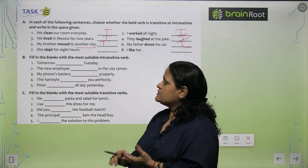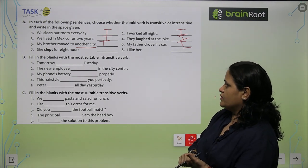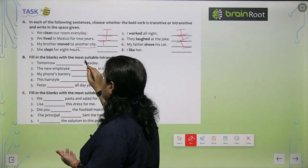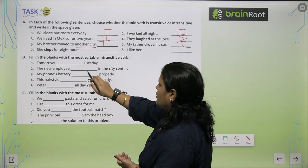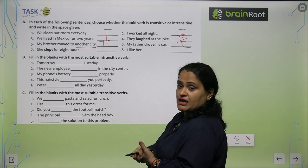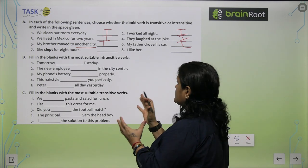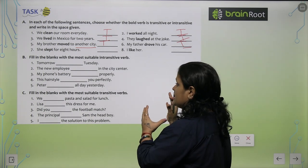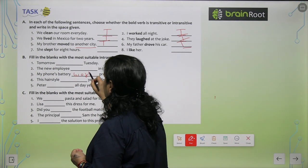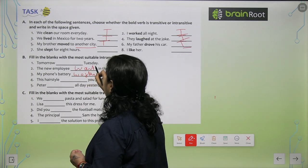Now the second exercise: Fill in the blanks with the most suitable intransitive verb. Intransitive verb hamein yaha par bharna hai. Tomorrow the new employee in the city center. Intransitive verb matlab hamein yaha par kya karna hai, aisi verb daalni hai jiske baad hamein object ki need nahi ho. My phone battery works properly. The new employee works.